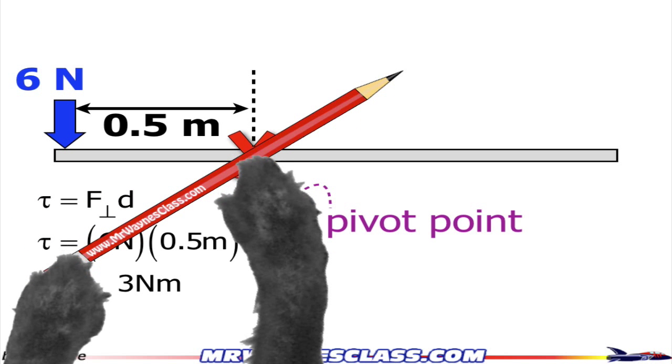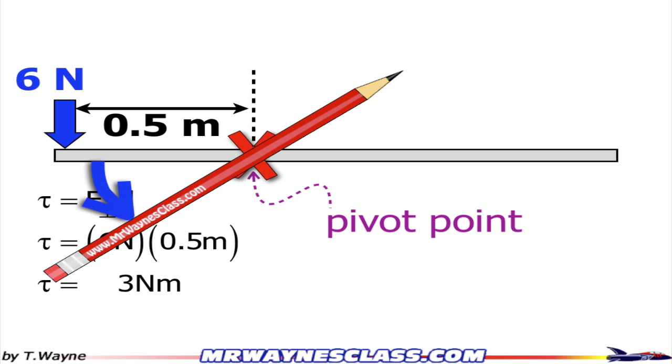So now we can all see how it rotates. And it rotates in a counterclockwise direction. So by definition, a counterclockwise rotation is a positive torque. So the torque is positive three newton meters.